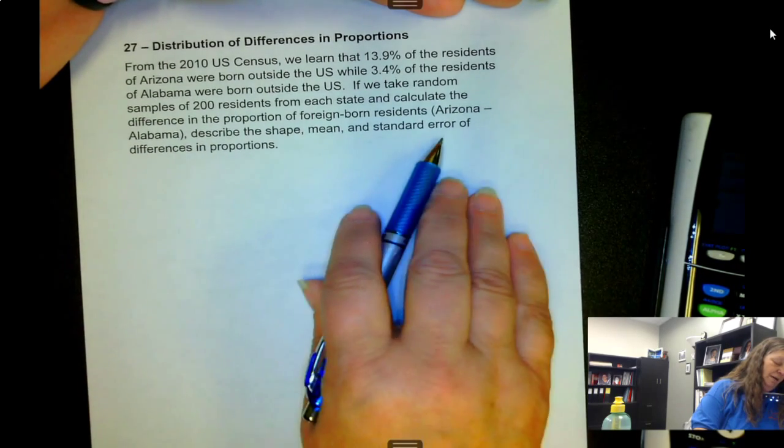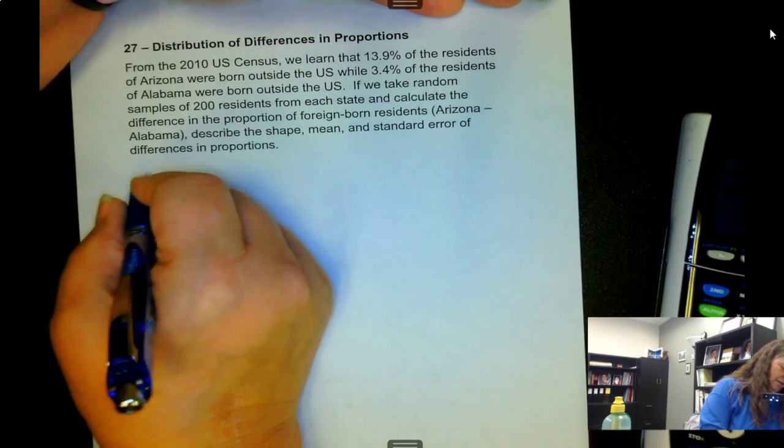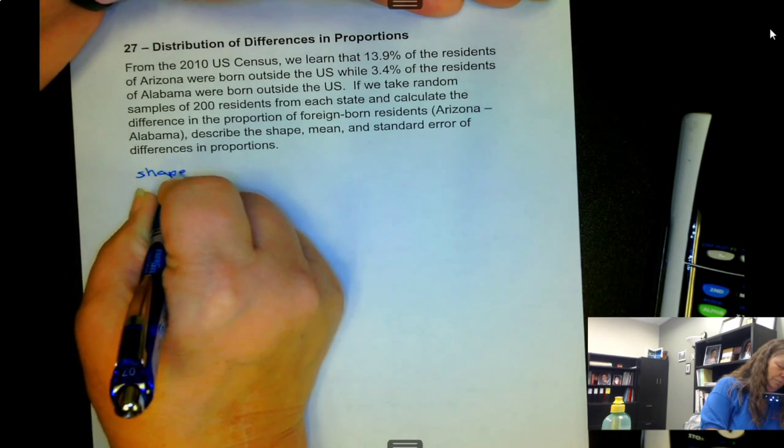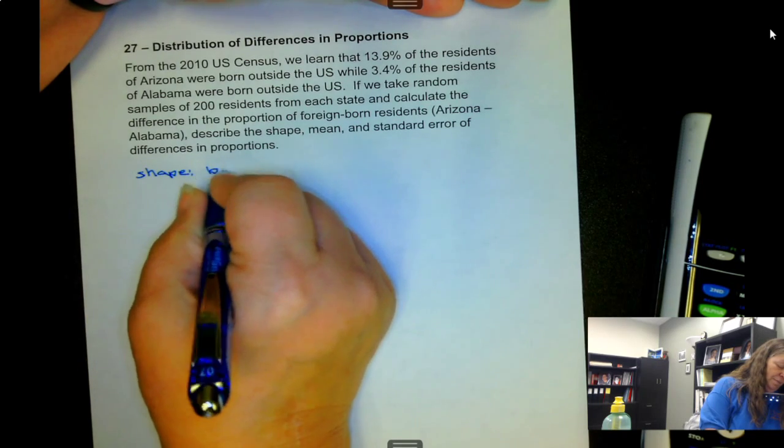Describe the shape, mean, and standard error. So the shape is going to be bell-shaped.